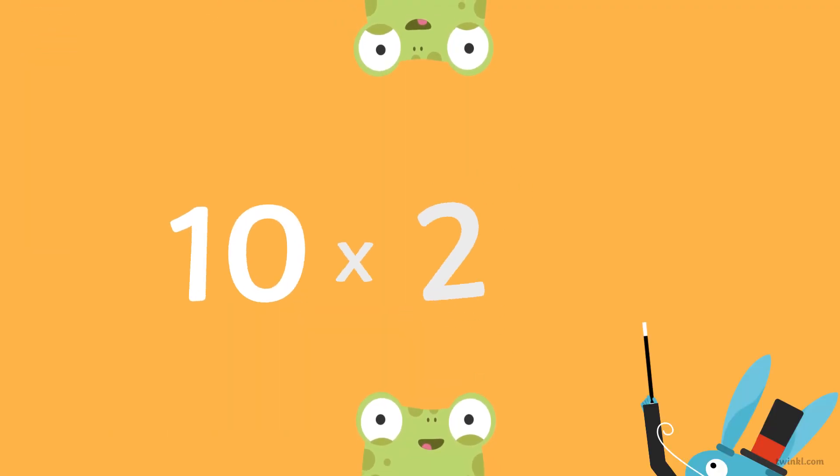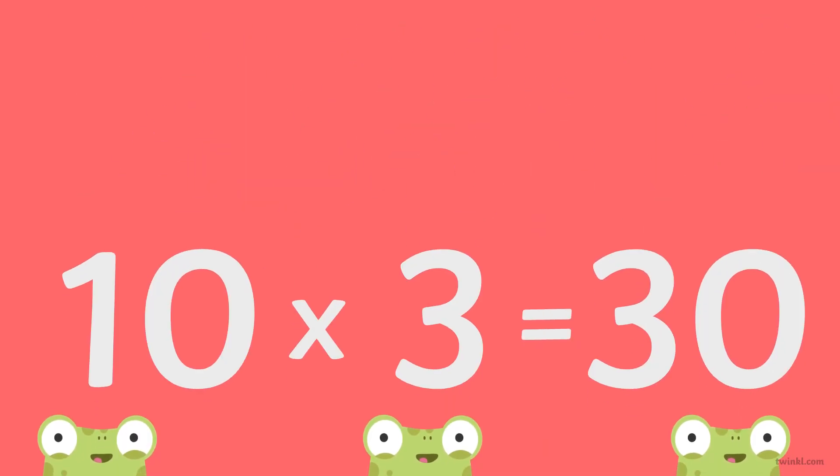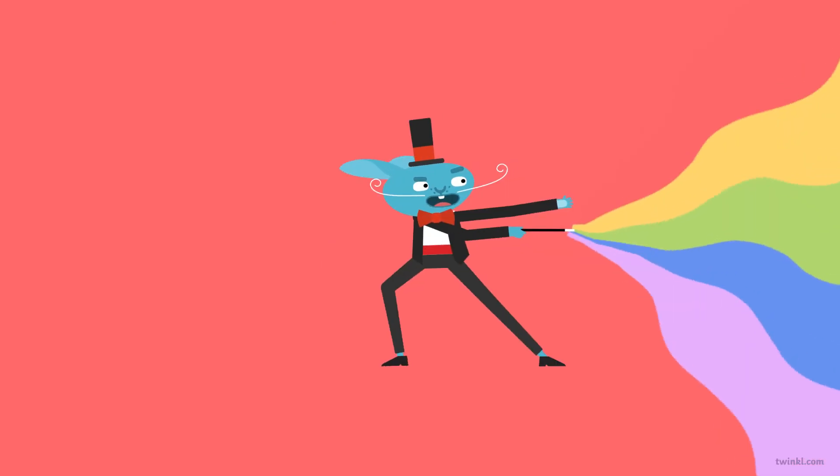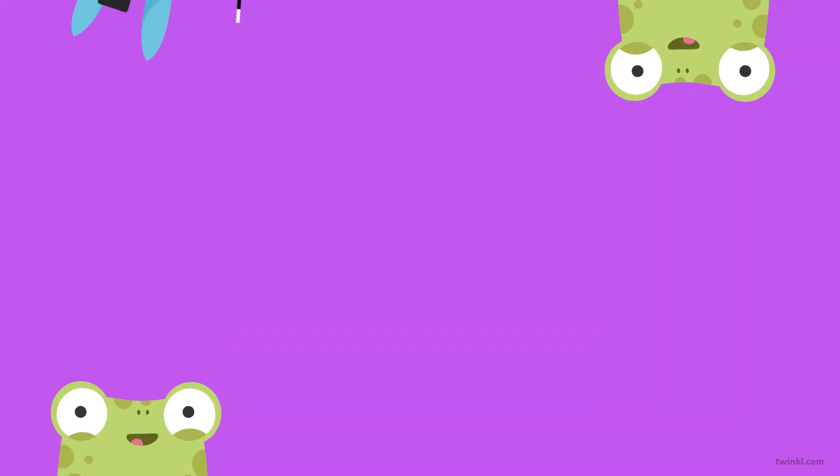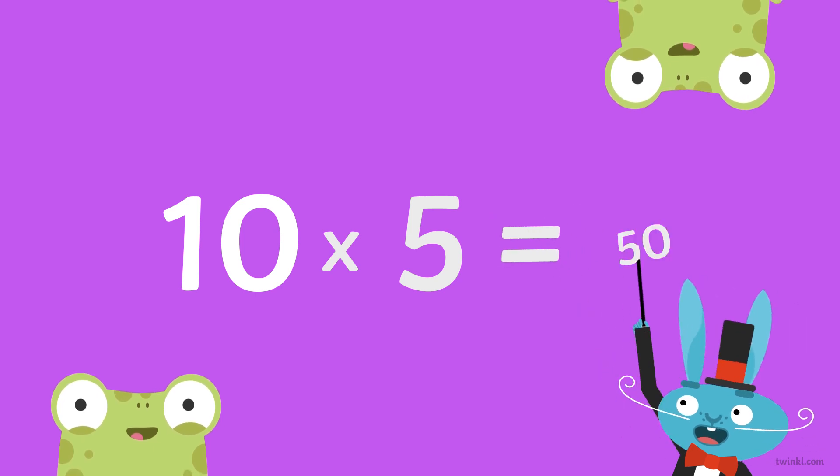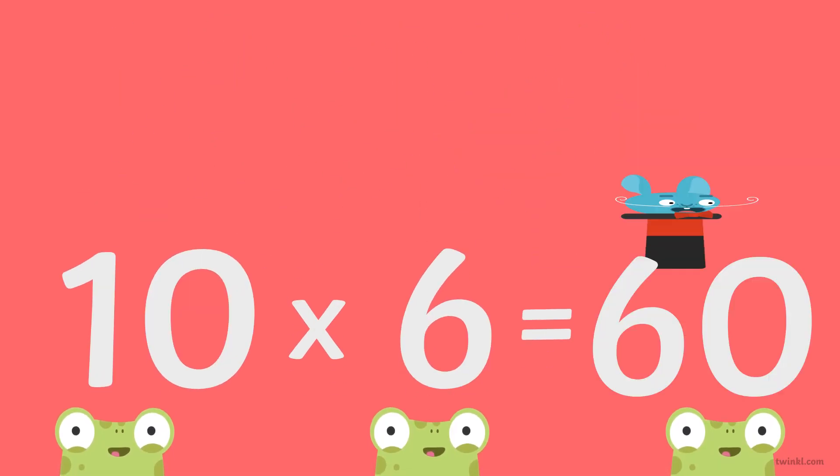Ten times two is twenty, ten times three is thirty, ten times four is forty, ten times five is fifty, ten times six is sixty.